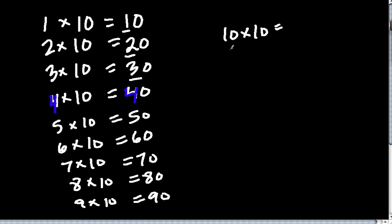The difference being that here we have 10 times 10. So going back here, 9 times 10 was 90. So now it's just 10 and another 0. And we can continue until we get to, let's say, 100 times 10.